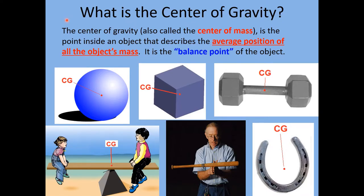So what is this concept called the center of gravity? The center of gravity, which is also sometimes called the center of mass, is a point inside an object that describes the average position of all the object's mass. Another way to think of it is the balance point of the object. Let's go through some shapes. For a solid sphere, like a bowling ball, the center of gravity is just the center of the sphere — that is the balance point.